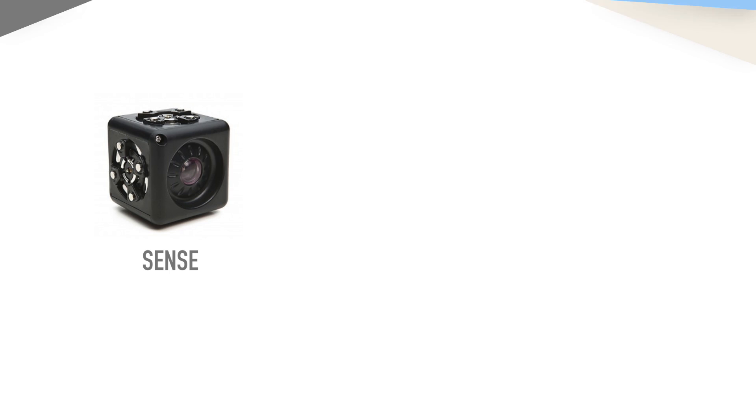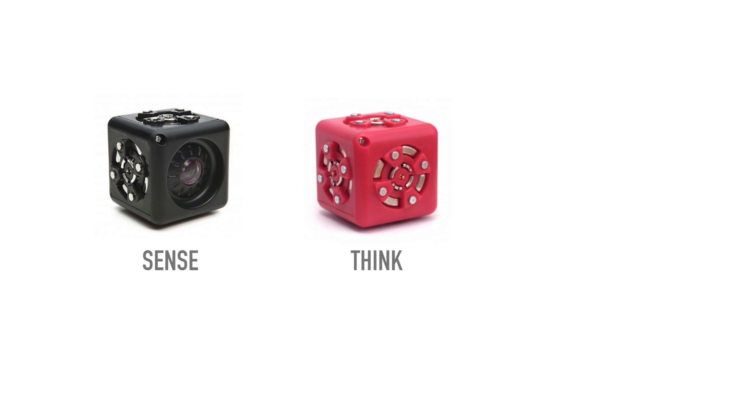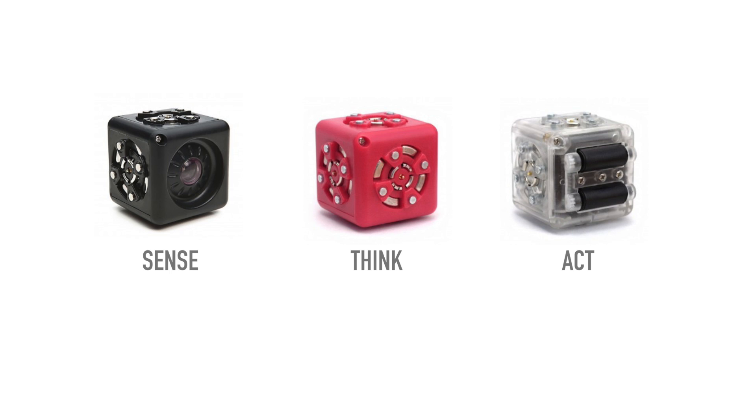Black Cubelets are sensing. These brightly colored Cubelets are all of the thinking functions, and all of the clear Cubelets are actions. Those are going to be the doing parts of the robot. For every robot, we'll also need power from this rechargeable battery Cubelet. So let's make a first robot.